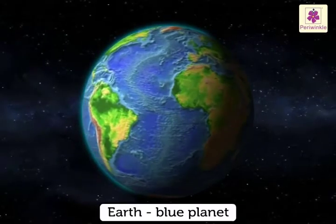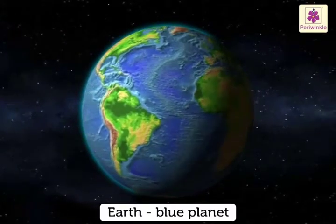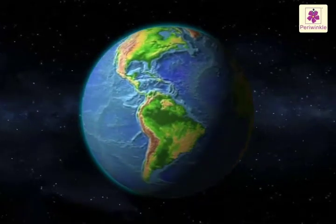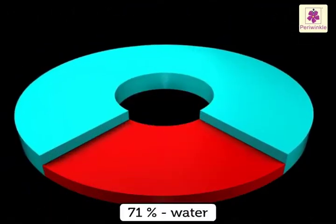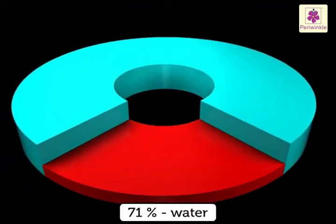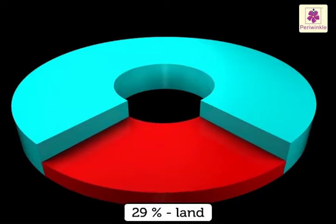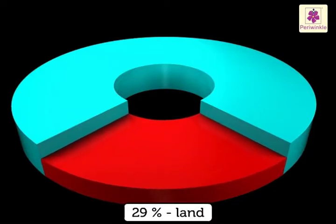Our Earth is called the Blue Planet, as 71% of it is covered with water and only 29% of it is land.